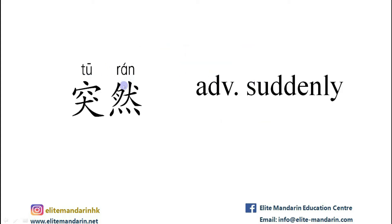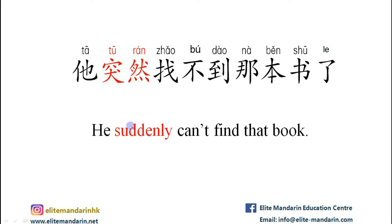突然 — it means suddenly. The example: 他突然找不到那本书了。 他 (he), 突然 (suddenly), 找不到 (can't find), 那本书 (that book), 了 (the modal particle). He suddenly can't find that book.